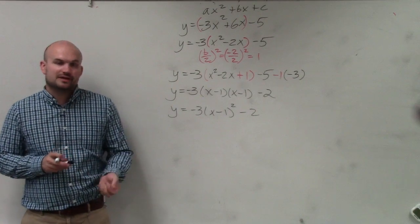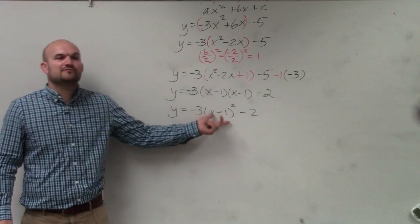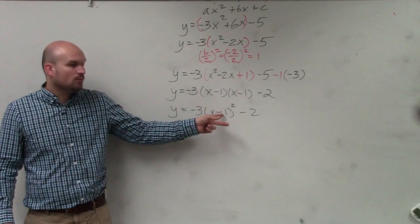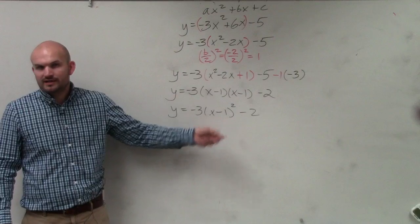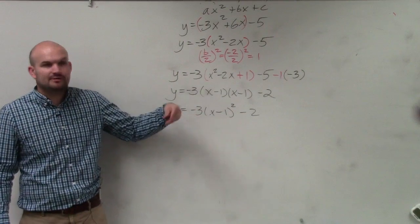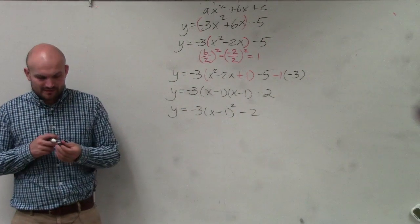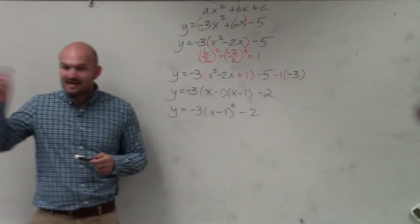Then at the beginning of the year, what do we do? We found the vertex, which in this case is 1, negative 2, right? And then we found the axis of symmetry. Then we plotted it, and we graphed it. That's what we did in the beginning of the year. So that's your example.